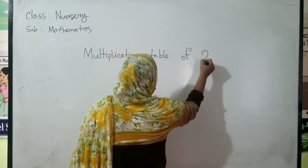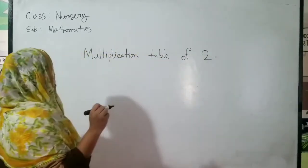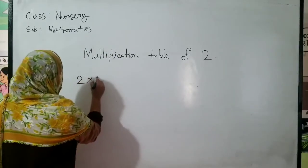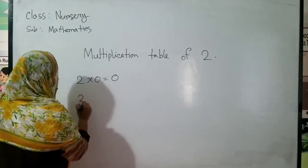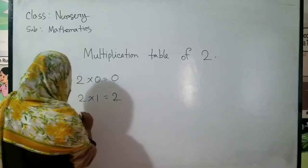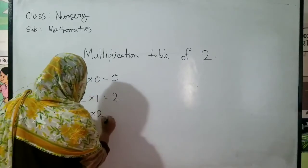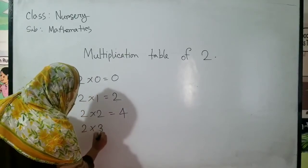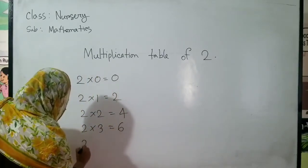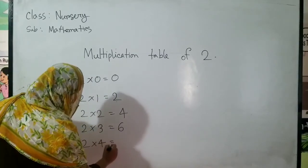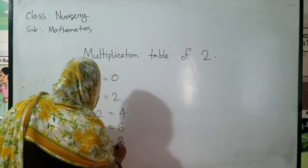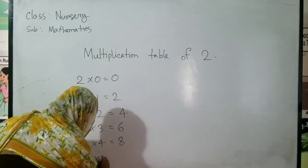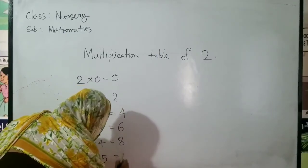Multiplication table of two. Two zeros are zero. Two ones are two. Two twos are four. Two threes are six. Two fours are eight. Two fives are ten.